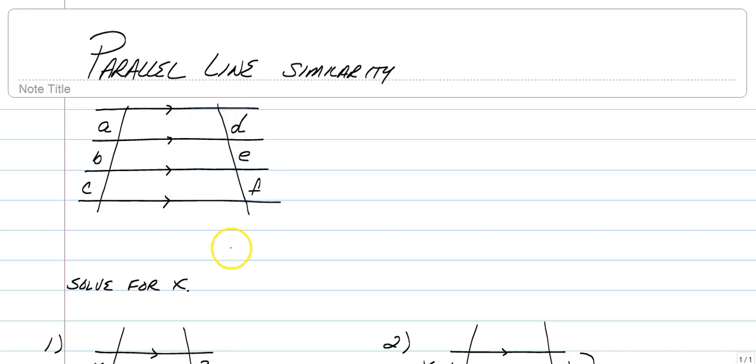When you have parallel lines that are cut by multiple transversals, not only do you have special properties with the angles, but in terms of the lengths of the sides in between the parallel lines, those are going to have similar ratios.